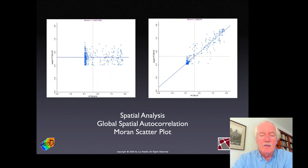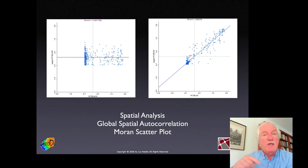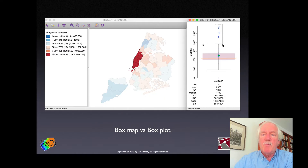Another technique we'll see later is spatial autocorrelation, shown in a graph. The graph on the left is flat, showing no relationship whatsoever — spatial randomness. The graph on the right shows a very steep positive slope, indicating very strong spatial autocorrelation, meaning similar values are in neighboring locations. Here's another example of aspatial versus spatial analysis: a box plot of the distribution of rents in New York City sub-boroughs, where observations above the fence are called outliers.